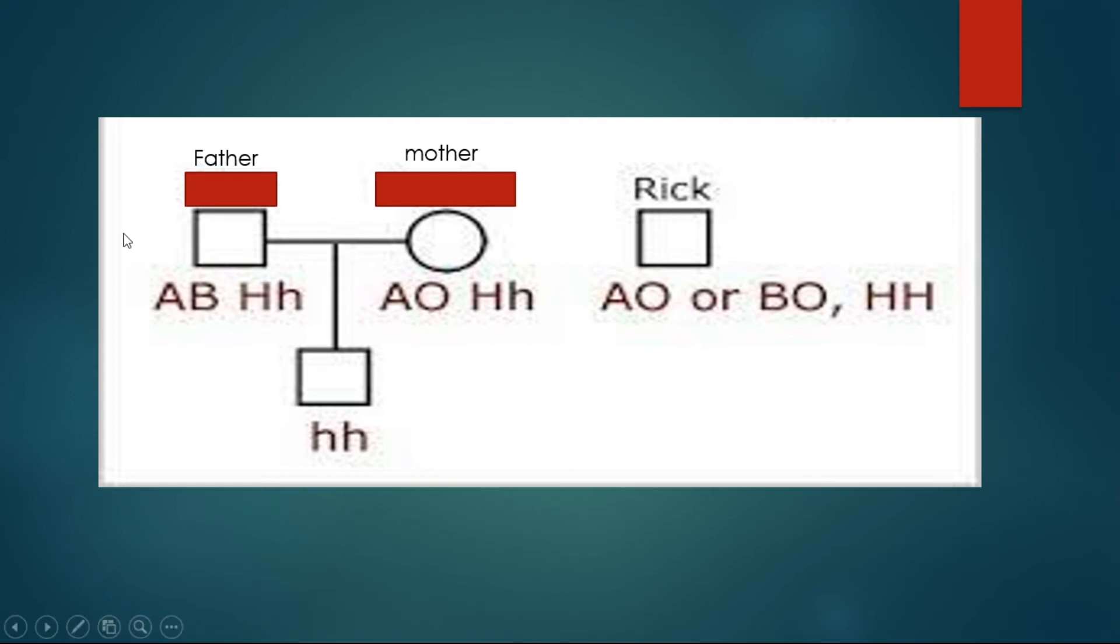Now see this example. This is the father's genotype. His chromosome 9—there are two chromosome 9s. His one chromosome 9 has a gene for antigen A and the other chromosome 9 has a gene for antigen B. So his blood group is AB.